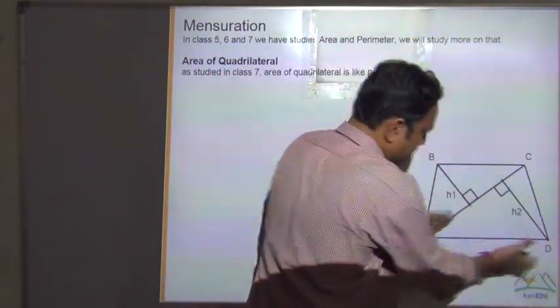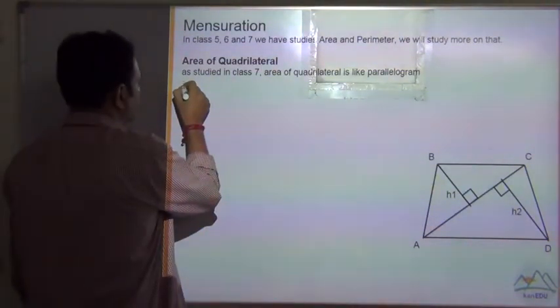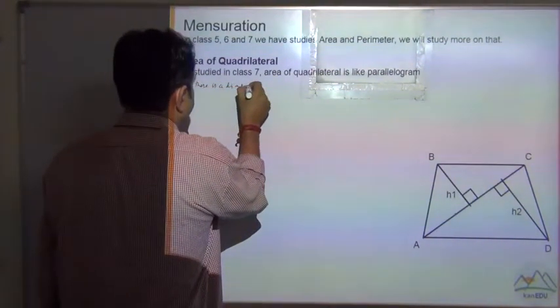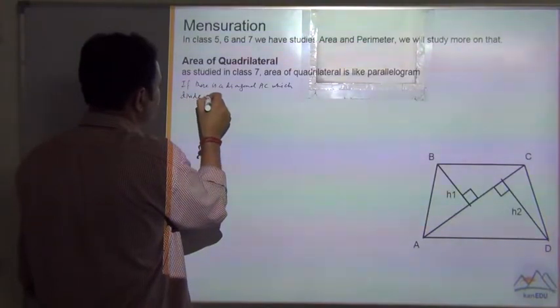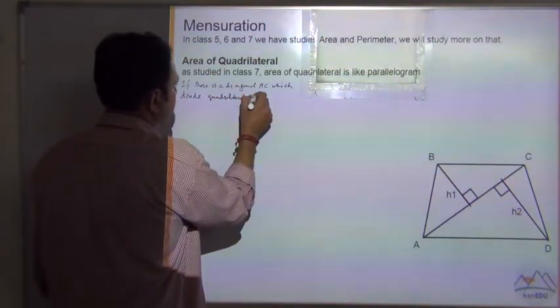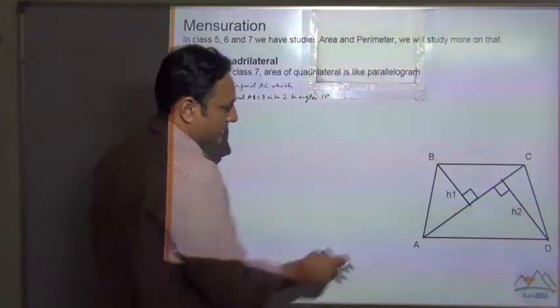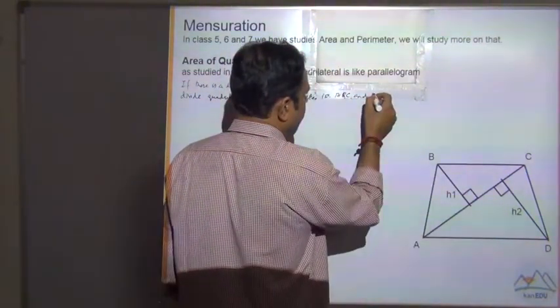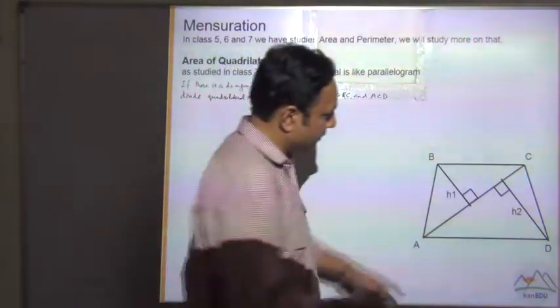One is ABC and other is ADC. So area of quadrilateral is like parallelogram. If there is a diagonal AC which divides quadrilateral ABCD into two triangles, that is the triangles ABC and ACD. And if we draw two perpendiculars on the diagonal from the opposite vertices.